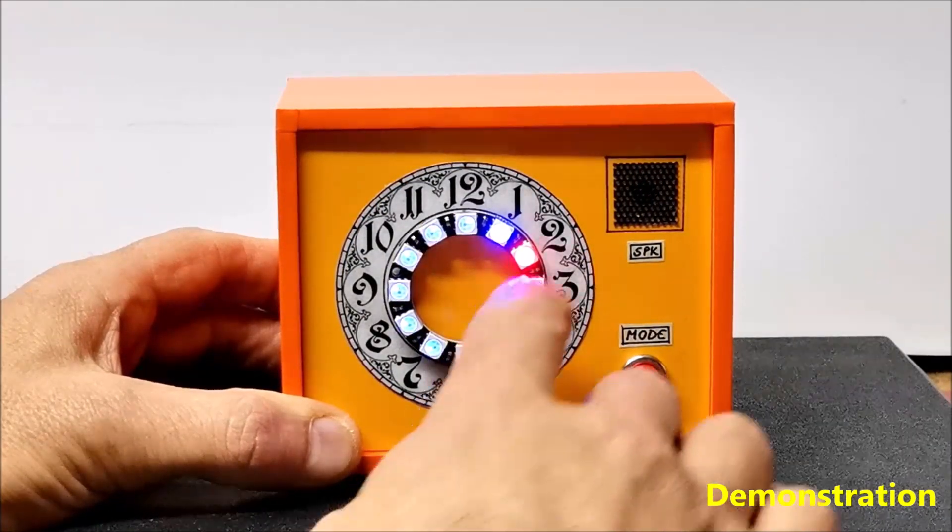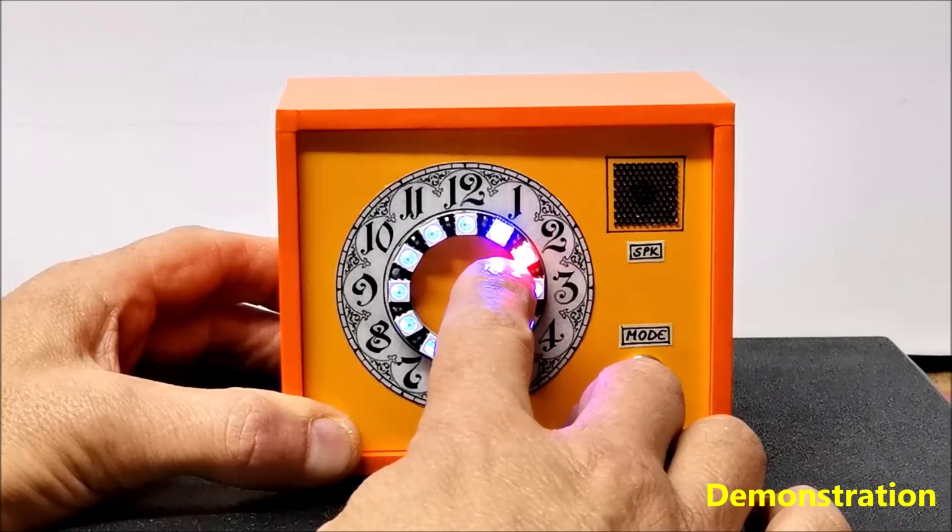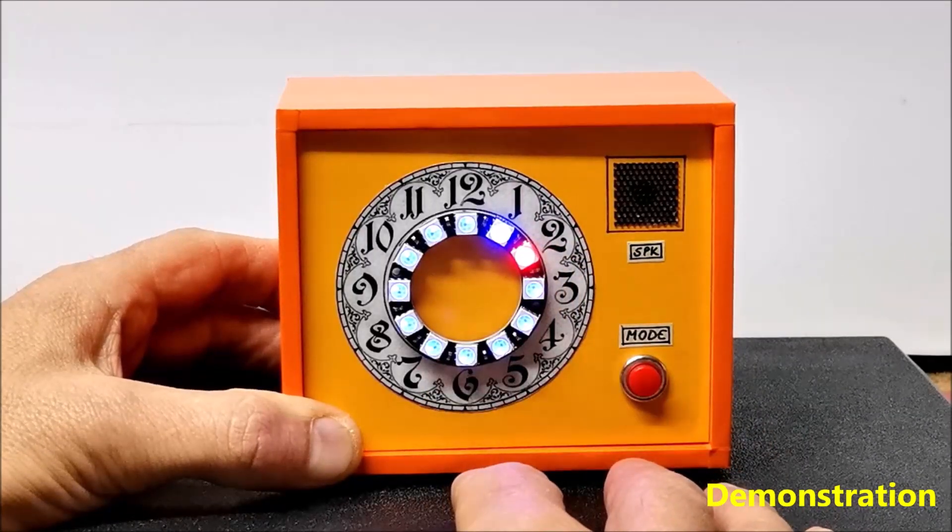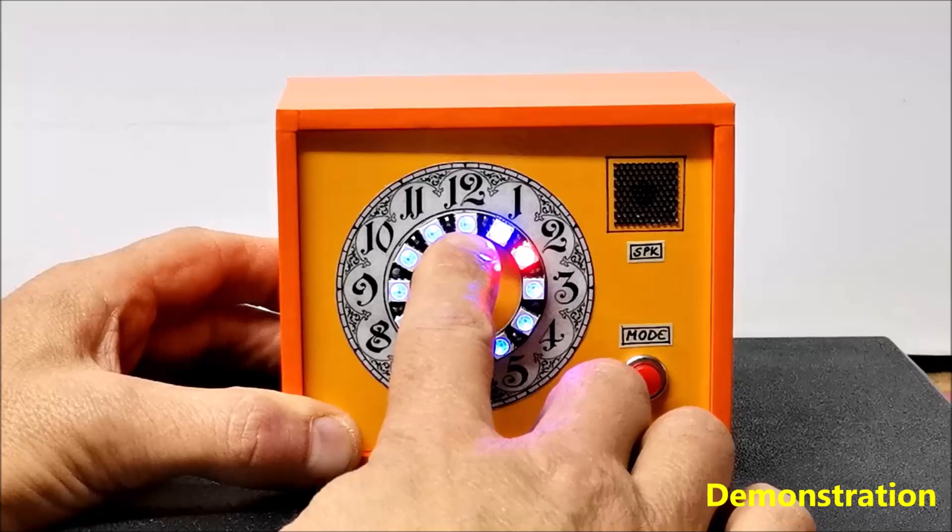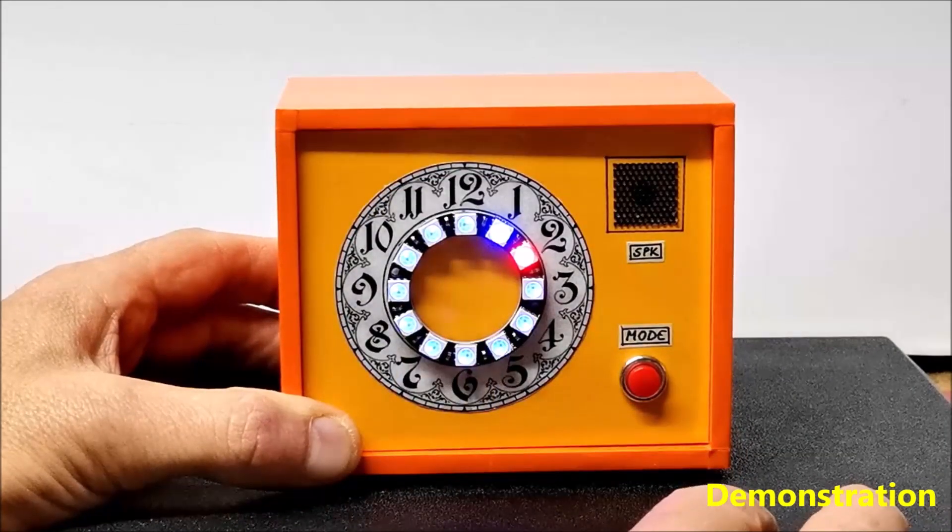Analogous to the previous case, the red LED represents the first digit, 2. And the blue LEDs the second digit, 21 degrees.